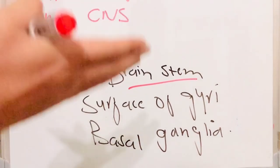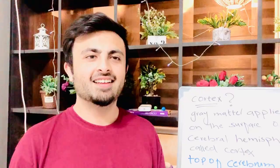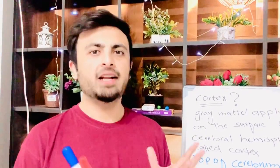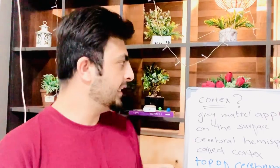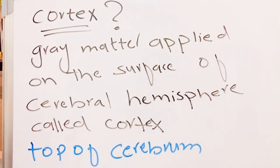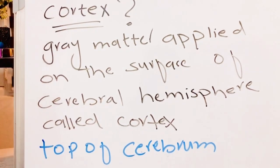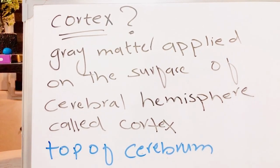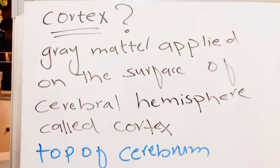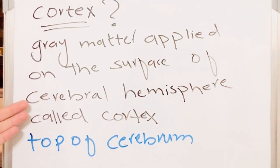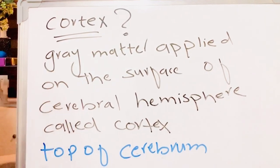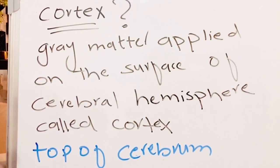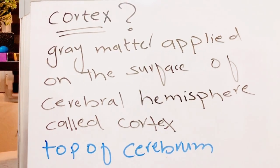Gray matter is also present on the surface of gyri and our basal ganglia. Now we will see what is cortex — one of the basic terminologies in neurology. Cortex is the gray matter applied on the surface of the cerebral hemisphere. The cerebral hemisphere refers to the two parts of the brain which are divided by commissural fibers. When the cerebral hemisphere is surrounded by gray matter, that is called the cortex, which is present in our cerebrum — the top part of the brain.